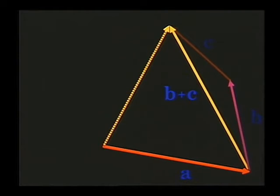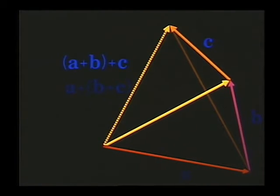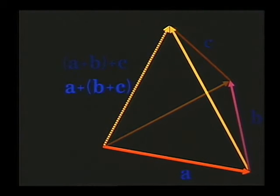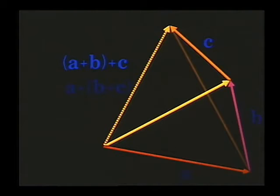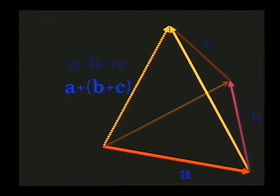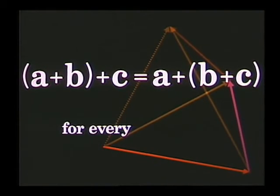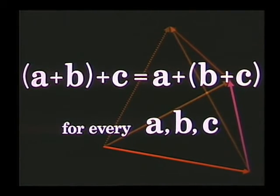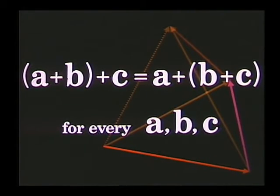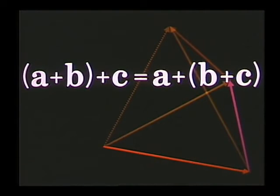Or we may add B plus C to A, obtaining the same sum. This is the associative law for vector addition. Associativity permits us to simplify the notation by deleting parentheses.